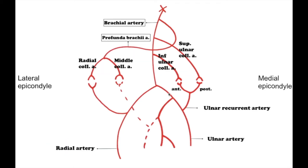The brachial artery terminates by bifurcating into the ulnar and radial arteries. Now let's separately talk about these arteries. Ulnar artery. The branches of the ulnar artery are the ulnar recurrent artery, arteria recurrens ulnaris, which gives off two branches, anterior and posterior. These branches run anteriorly and posteriorly of the medial epicondyle.